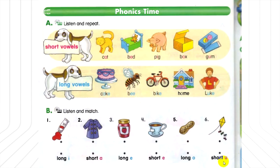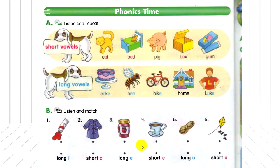B. Listen and match. Number 1: red, red. Number 2: coat, coat. Number 3: jam, jam. Number 4: tee. Number 5: nut, nut. Number 6: kite, kite.